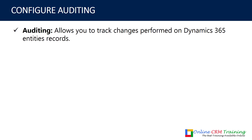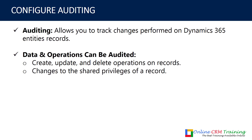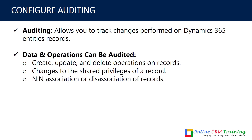What operations and data can be audited? Number one, you can audit operations like create, update, or delete a record. Any operation you perform will follow the auditing trail. Also, any changes to the shared privileges of a record — if the shared privileges have been changed, you will be able to track that using auditing.